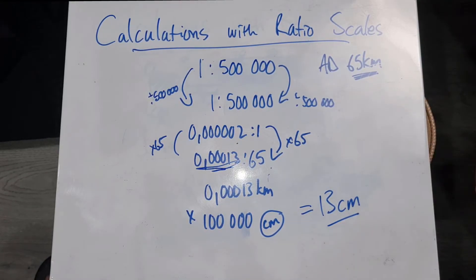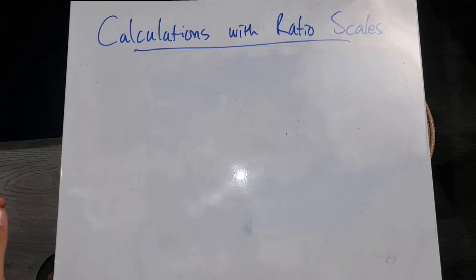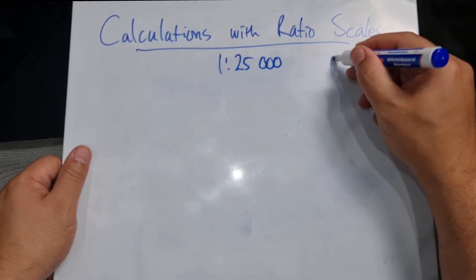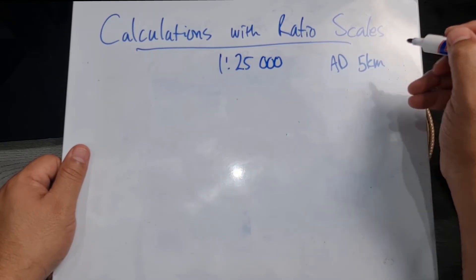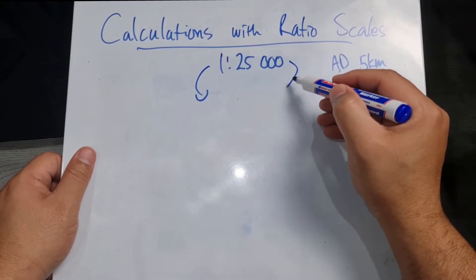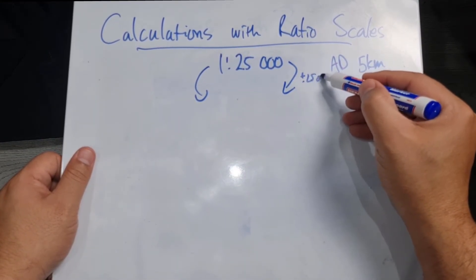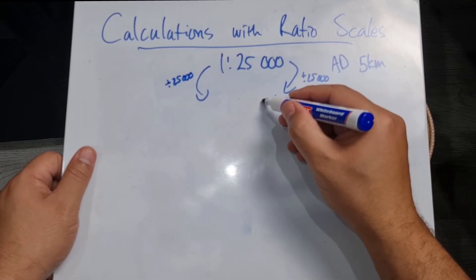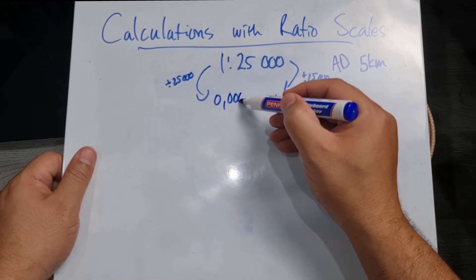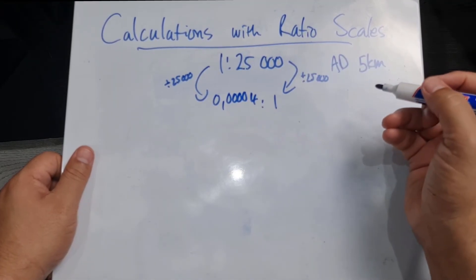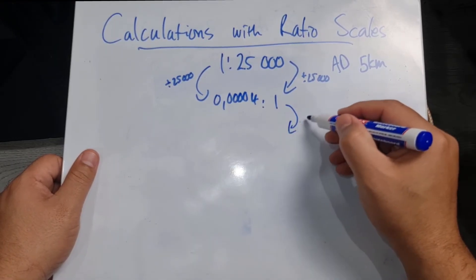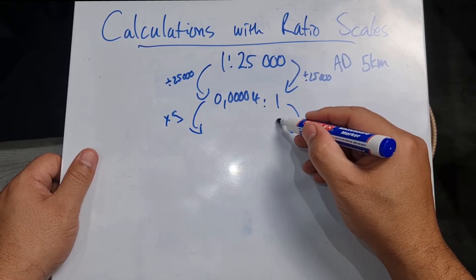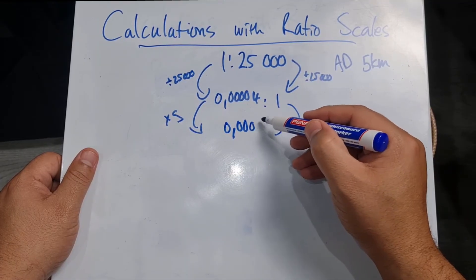Let's do one last example with a ratio of one is to 25,000 and an actual distance of five kilometers. We already know what's going to happen — I'm going to divide by 25,000, and that's going to give me one on the left and 0.00000004 on the right. They want five kilometers, so I'm going to multiply that by five, and I'm going to sit with 0.00000025.